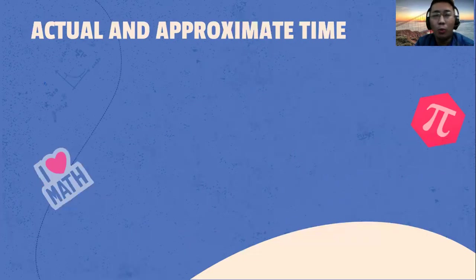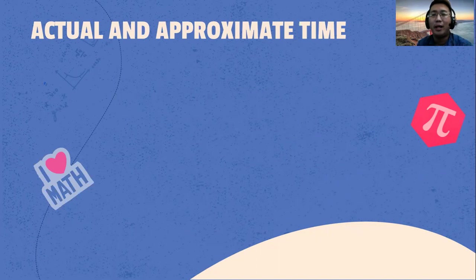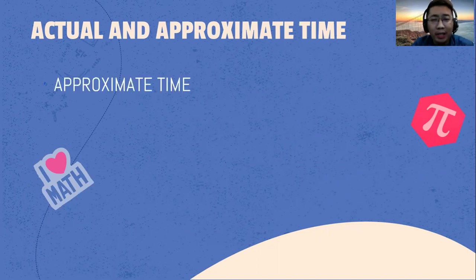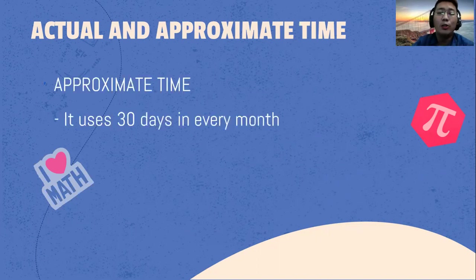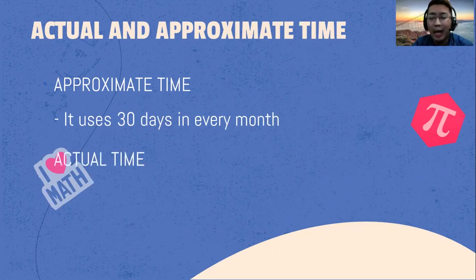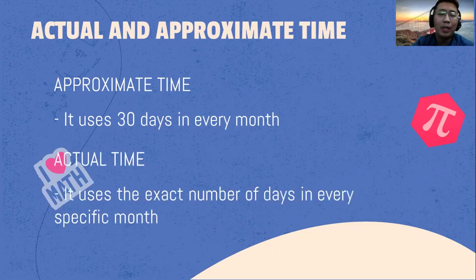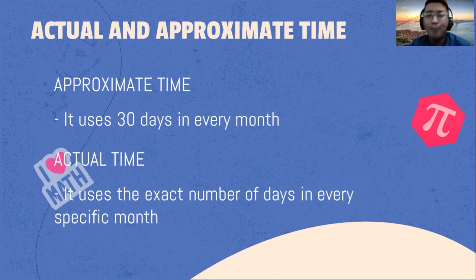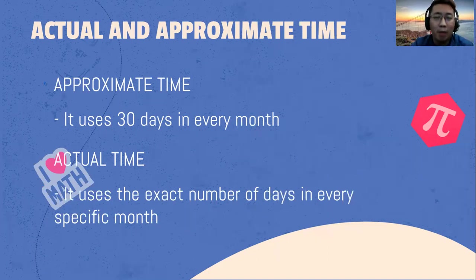What is the difference between actual and approximate time? Approximate time uses 30 days in every month. On the other hand, actual time uses the exact number of days in every specific month.